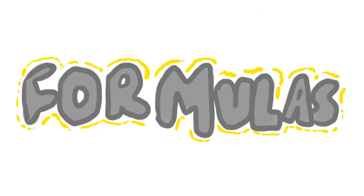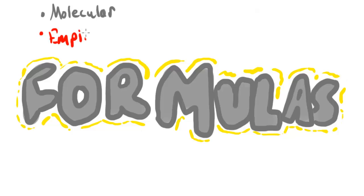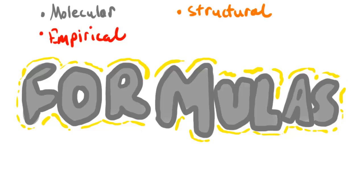There are about four I'm going to talk about in this video, and I'll talk about the other two in a different video. The four types of formulas I'm going to cover are: molecular formulas, empirical formulas — you're probably familiar with these two from Unit 1 Chemistry, so this is just a little recap — and we're also going to be looking at structural formulas and displayed formulas.